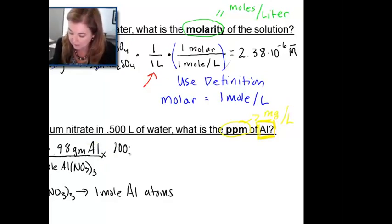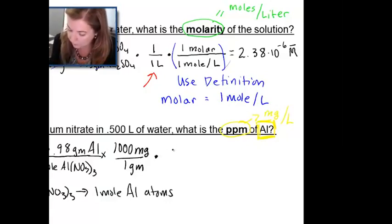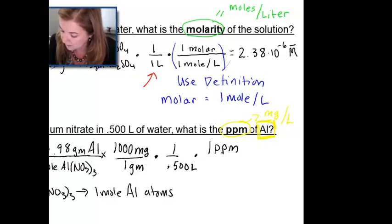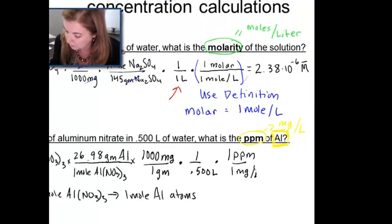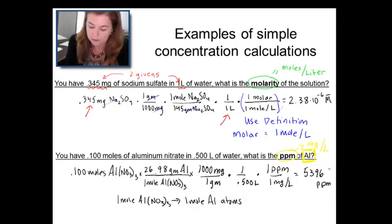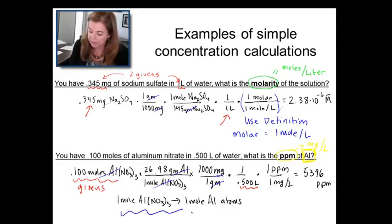Then we multiply by a conversion that takes us to milligrams, because at the end we want milligrams. Then we use our other given, which is 0.500 liter. And finally the definition: one ppm equals one milligram per liter. When we put all that out, we get 5396 ppm. We use two givens, there's cancellation of units, and this important distinction: when you want something about aluminum, you have to remember to use the atomic weight and not the molecular weight.